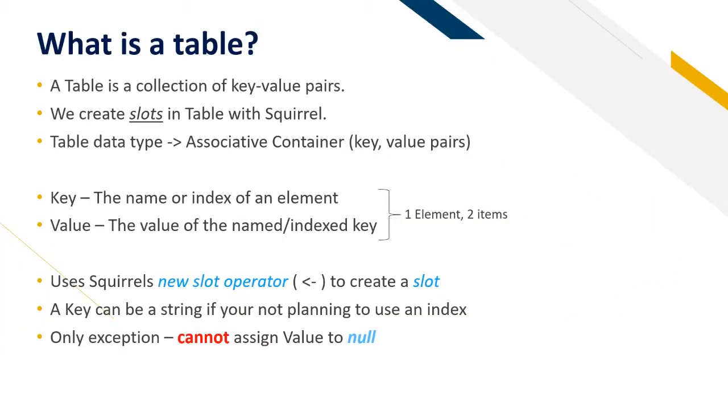What is a table? A table is a collection of key-value pairs. We create slots in tables with Squirrel. This data type is an associative container, which is a data structure with key-value pairs.